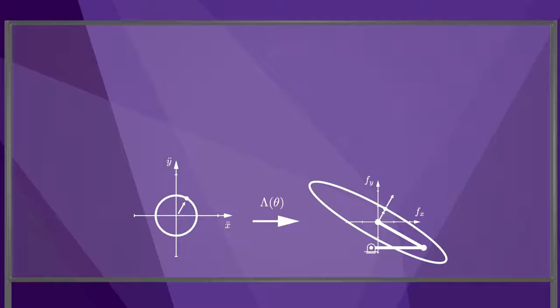For all force directions not aligned with the principal axis of the ellipse, the acceleration direction is not parallel to the force direction. To see this, let's map a circle of endpoint forces through the inverse end effector mass matrix to get an ellipse of end effector accelerations. For an endpoint force purely in the x direction, as indicated by the dot on the circle of forces, we get an end effector acceleration that has both x and y components, as indicated by the dot on the ellipsoid of accelerations.